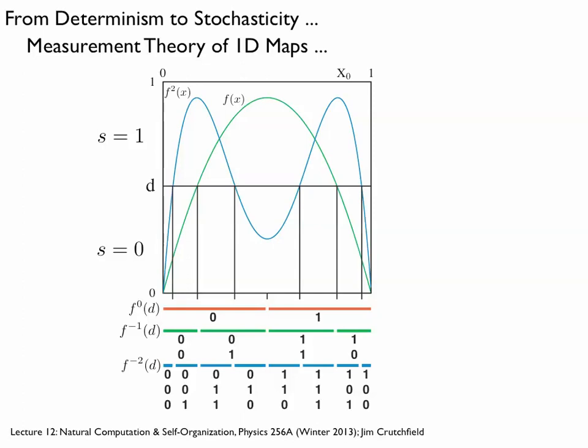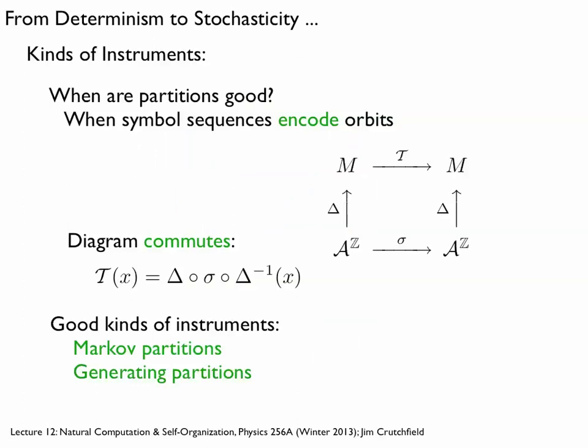Now, to emphasize faithfulness: when are these partitions good? At this point it's been our choice which partition to take. The examples I gave happened to be good, but you could choose d to be some other value for the logistic map — that's an interesting question. A bad partition might appear to add structure or make the system appear more or less chaotic than it is. The goal is to be more precise about what goodness of partition means. We want simple sequences to encode the orbits, hopefully in a one-to-one mapping.